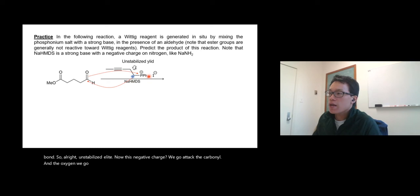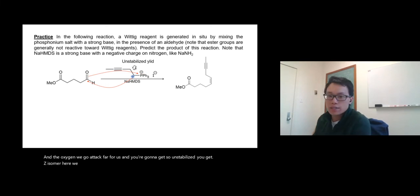Now this negative charge will go attack the carbonyl and the oxygen will go attack phosphorus, and you're gonna get—unstabilized, you get Z isomer. Here we go, that's how you draw it.